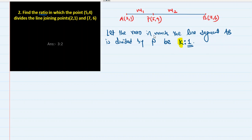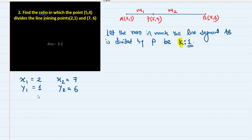Here x1=2, y1=1, x2=7, y2=6. The ratio is not given, so let m1=K and m2=1. The coordinates of point P are x=5 and y=4 — these are given. Since both x and y are known, we only need to apply one formula to find K. The x-coordinate formula: x = (m1·x2 + m2·x1) / (m1 + m2).